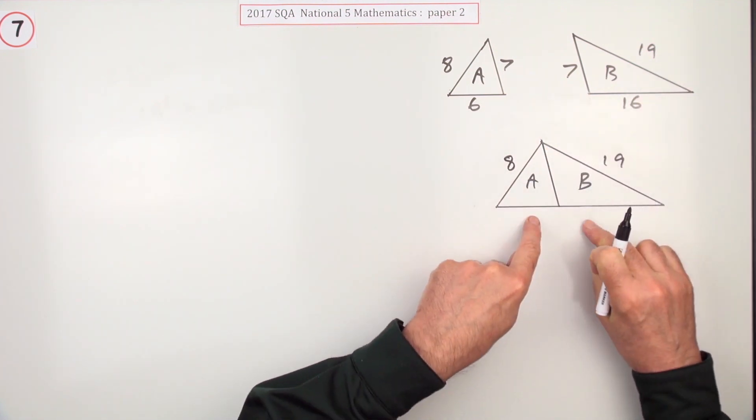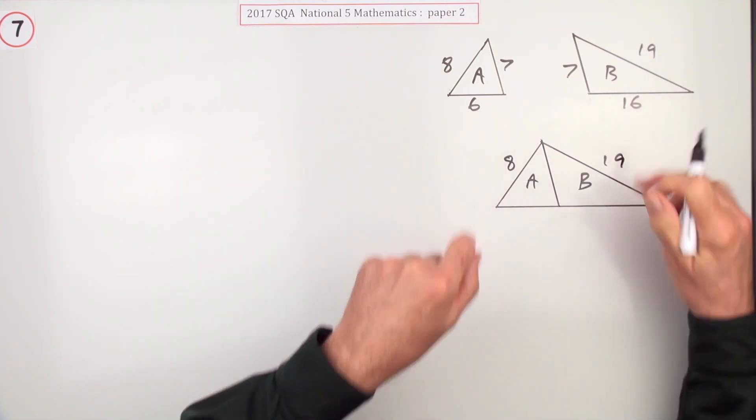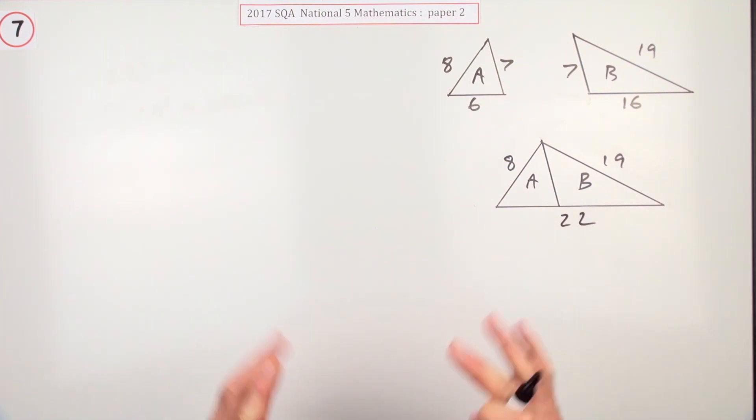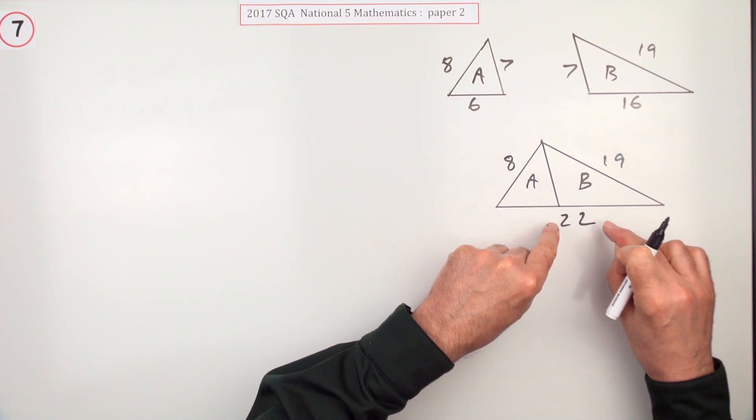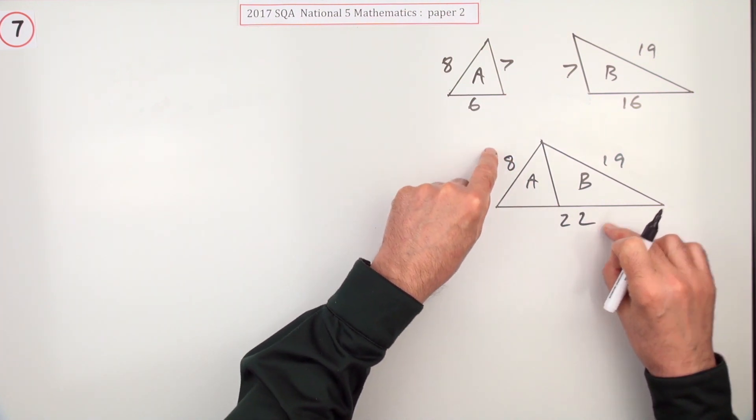But this side will be formed from these two, the six and the 16, joining together to make 22. The question is: is it right-angled? Is 22² the same as 8² plus 19²? Does Pythagoras work?